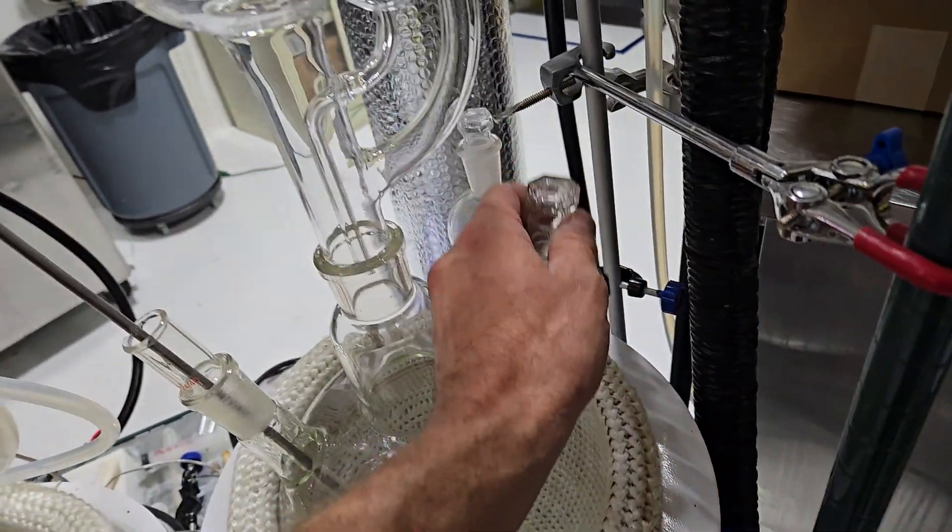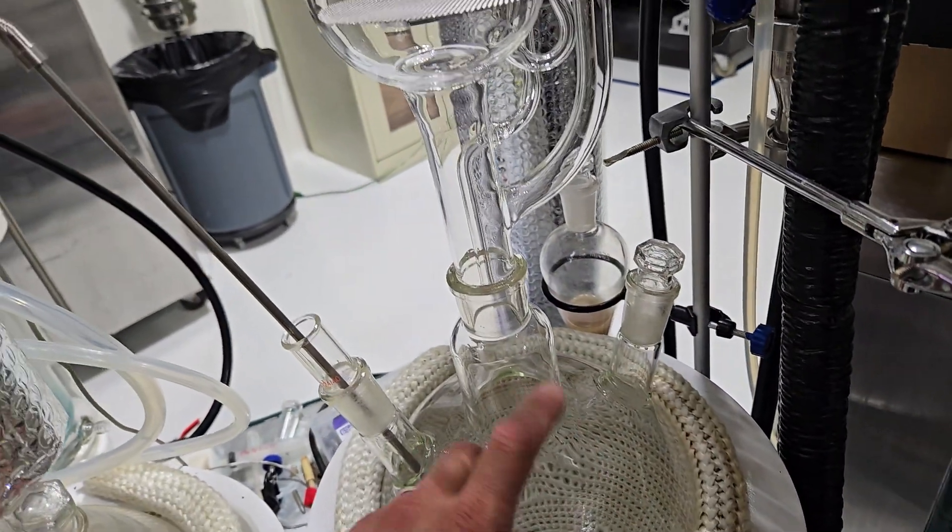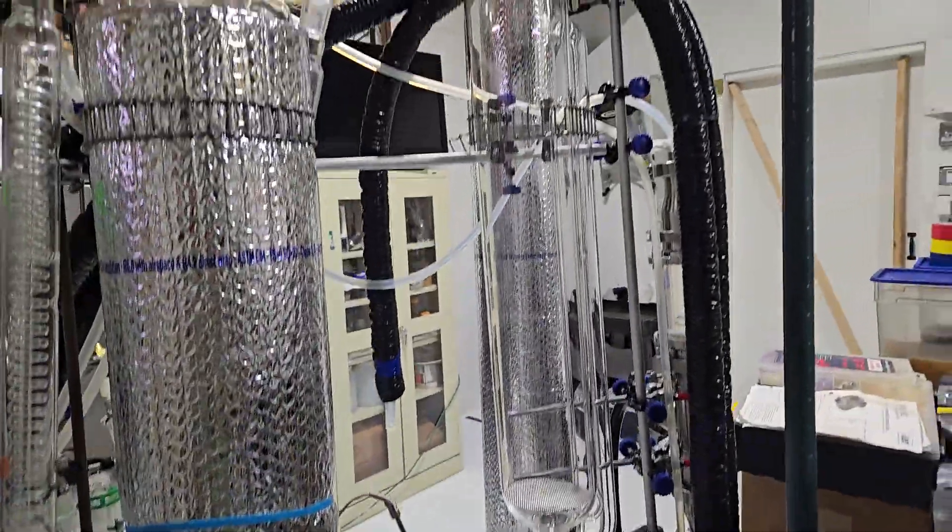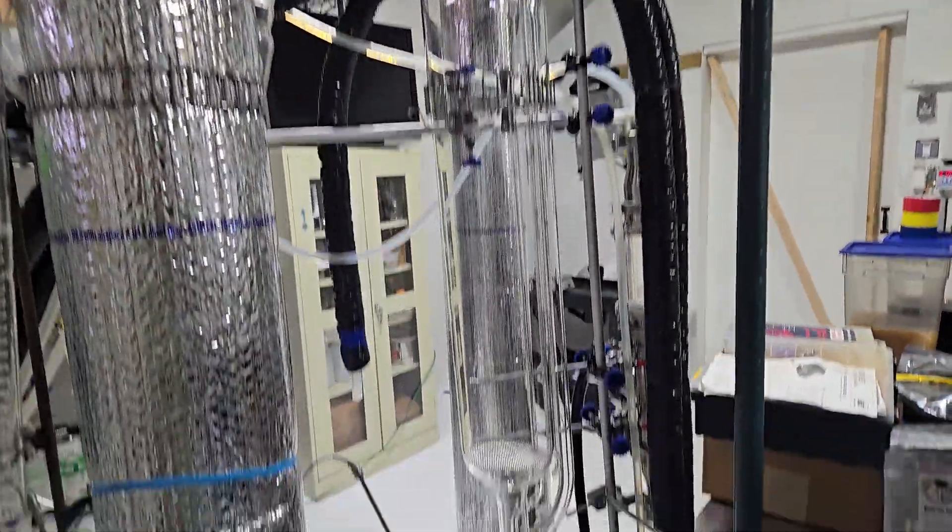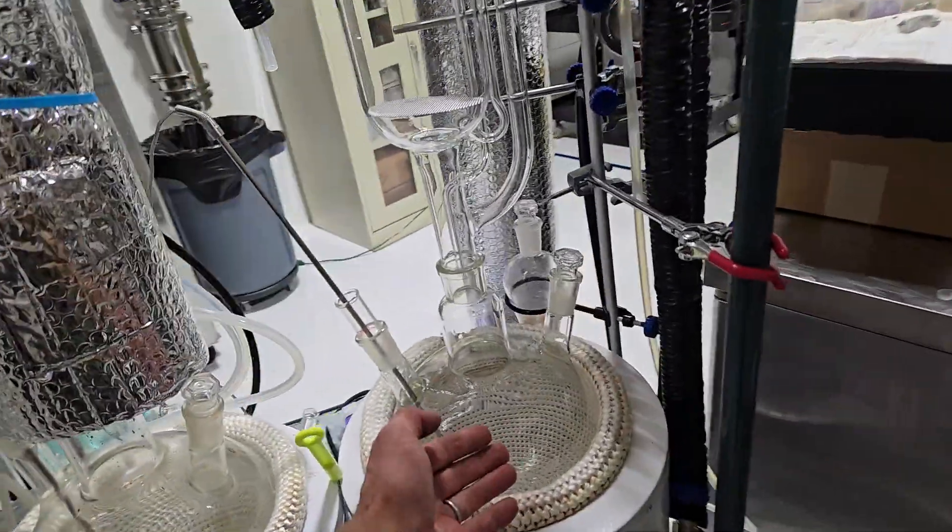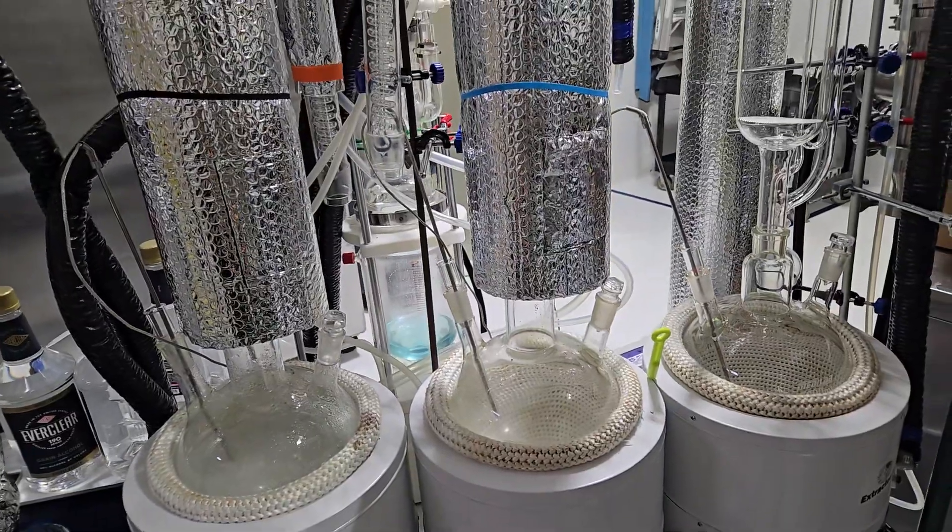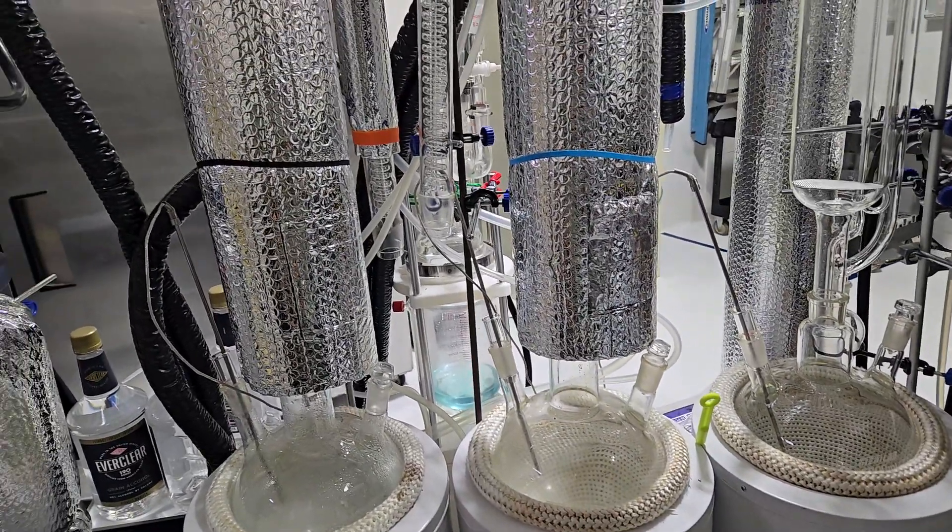Just change out your Soxhlet extractor part besides the extractor apparatus and save you a little bit of handling. So you don't need to clean this every single time. You could just keep batching cycles of solvent through it, especially if you're keeping it all hot.